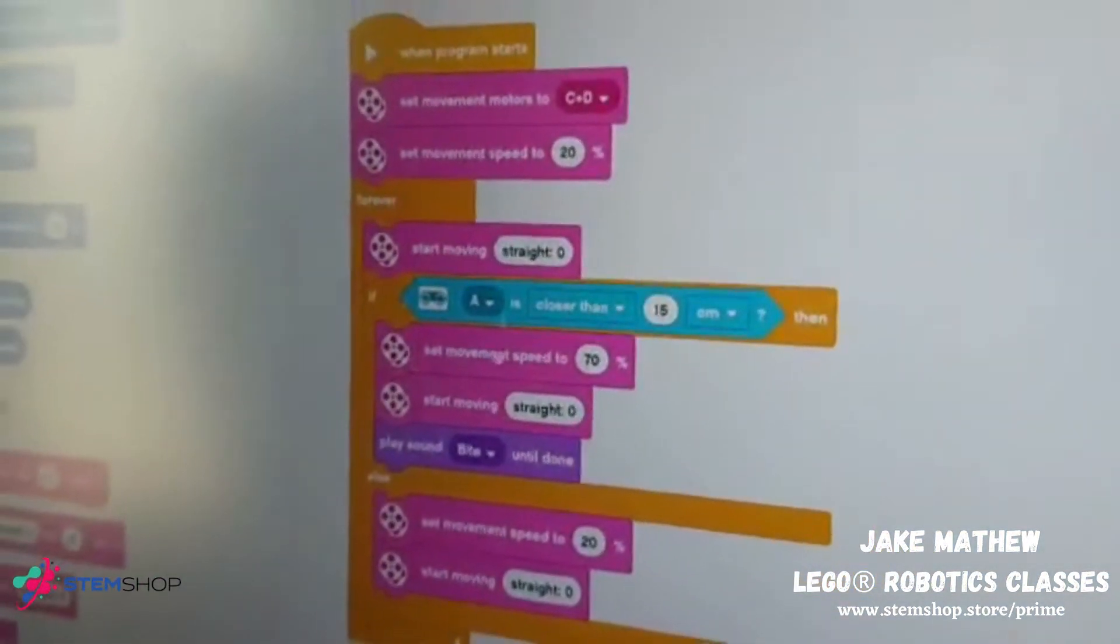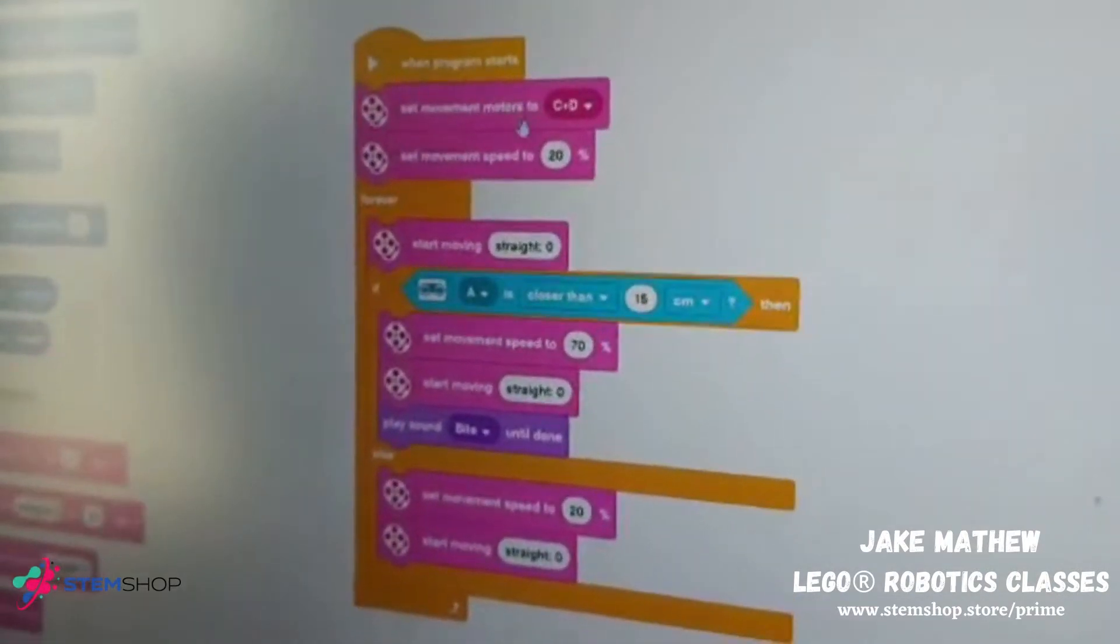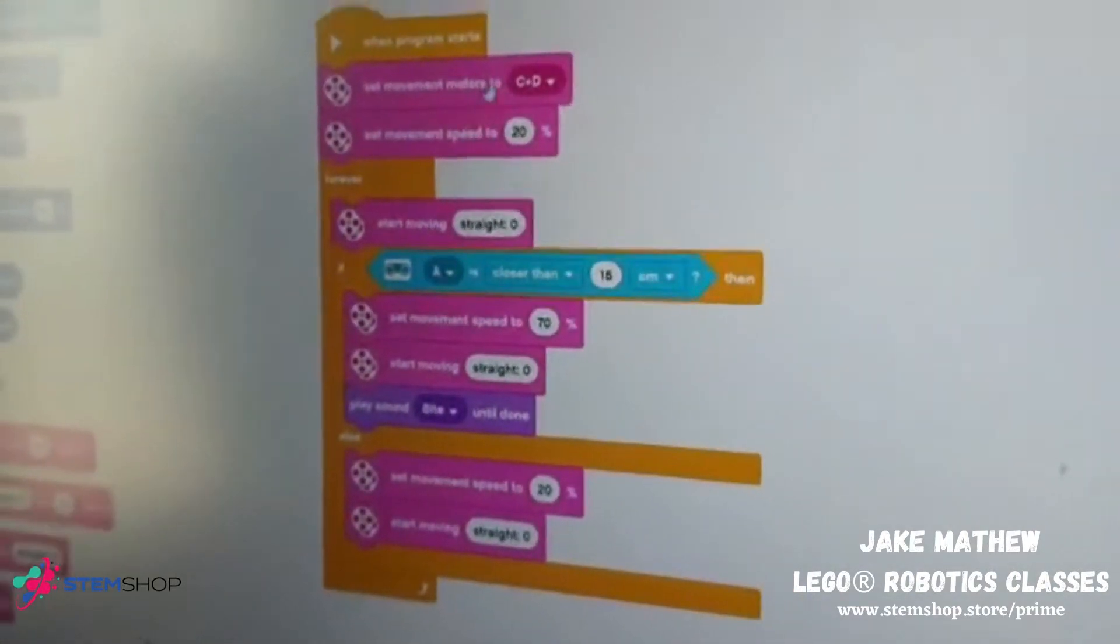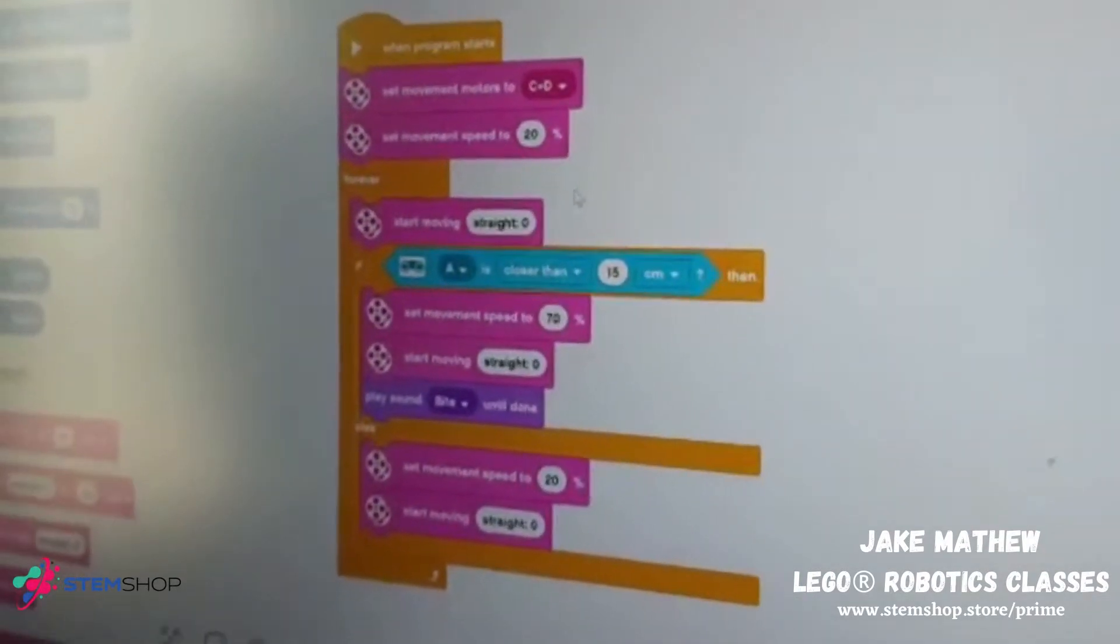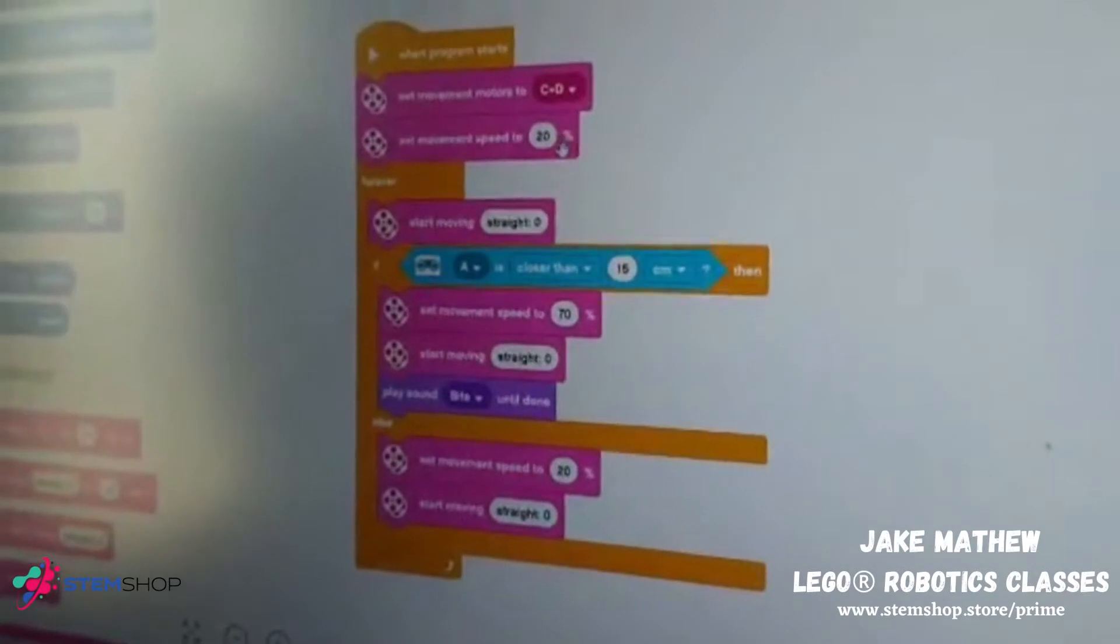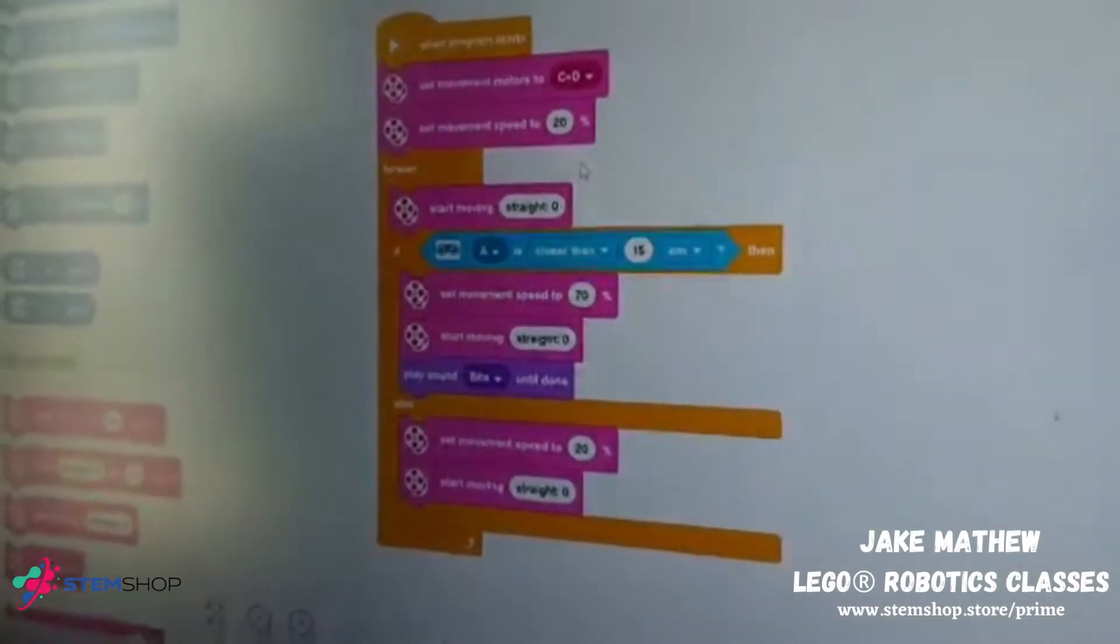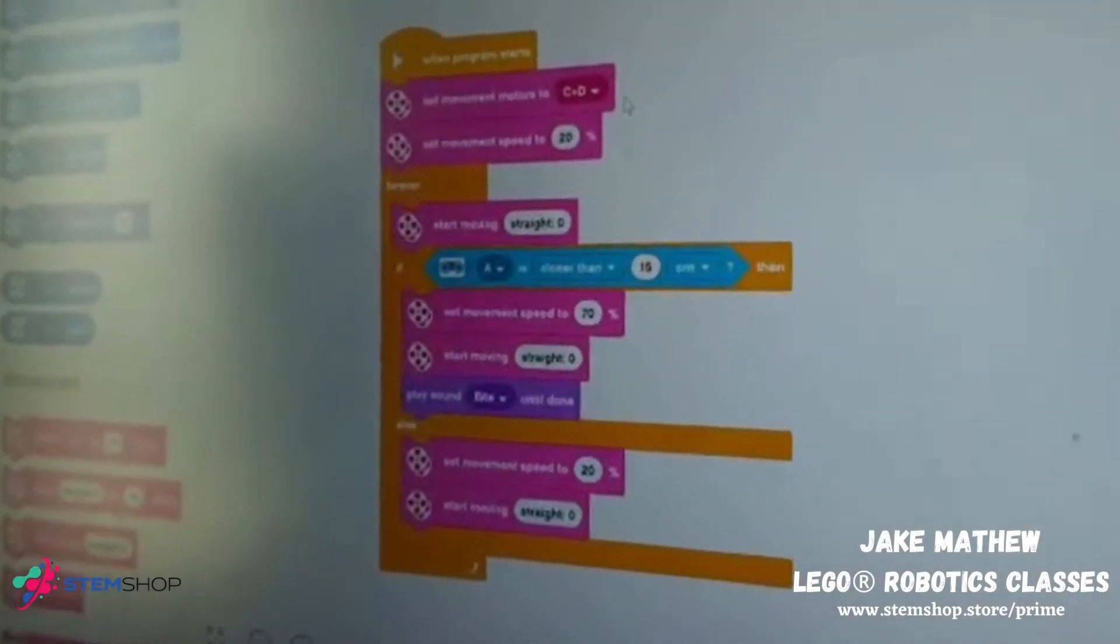You need to first put set movement motors to C plus D, set movement speed to any speed you want. I put it on 20% for now. You can put it for 100, but it might go super fast. So, 50, it's okay.